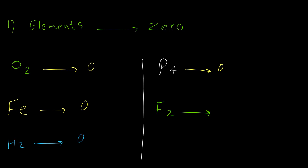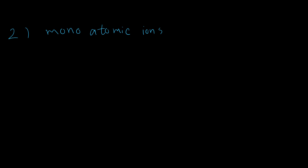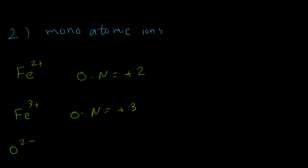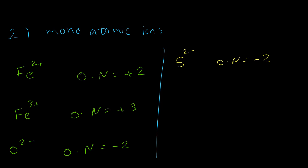F2, fluorine: the oxidation number for each atom is zero. The second rule is for monoatomic ions — the oxidation number is equal to the charge of the ion. For example, iron(2+): oxidation number is +2. Sulfide anion: oxidation number is -2. Sodium cation: +1. Fluoride anion: -1. So the charge is equal to the oxidation number.